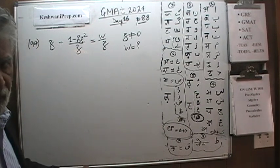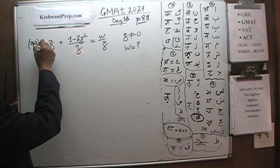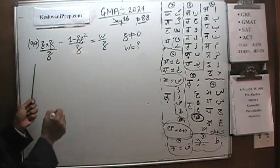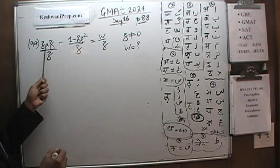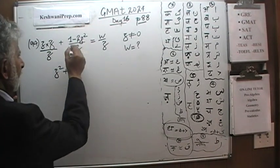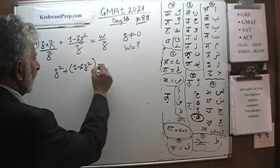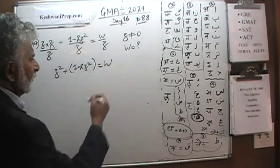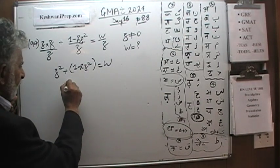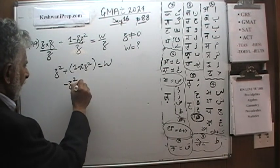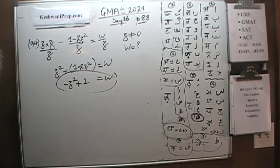As I said, it's very straightforward. Multiply top and bottom by z so we have a common denominator everywhere — z appears at the bottom everywhere, so we can ignore it. We get z squared plus one minus two z squared equals w, which is exactly what we want. We have to simplify: positive z squared minus two z squared gives us negative z squared, plus one. That's our answer — negative z squared plus one. Nothing to it.